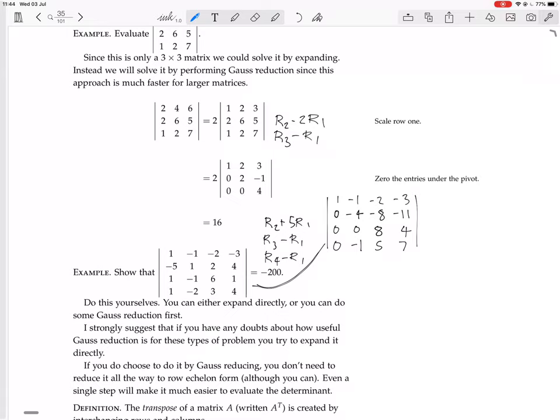So now we could expand down the first column. We get—that's an even entry there, so the determinant of minus 4, minus 8, minus 11; 0, 8, 4; minus 1, 5, 7.